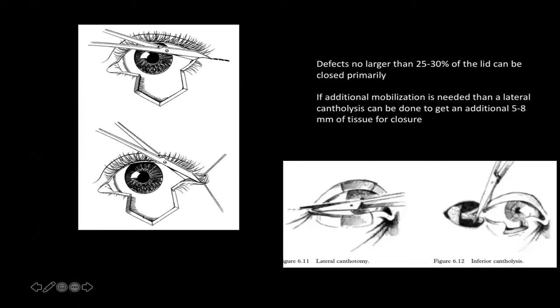Defects no larger than 25–30% of the lid can be closed primarily — make it pentagonal. If additional mobilization is required, do a canthotomy: cutting the lateral canthal tendon allows the lower lid to move much more, giving another five to eight millimeters of mobilization. Canthotomy and cantholysis is something every trainee should know — it is not a difficult procedure and really helps in mobilizing the residual lid.